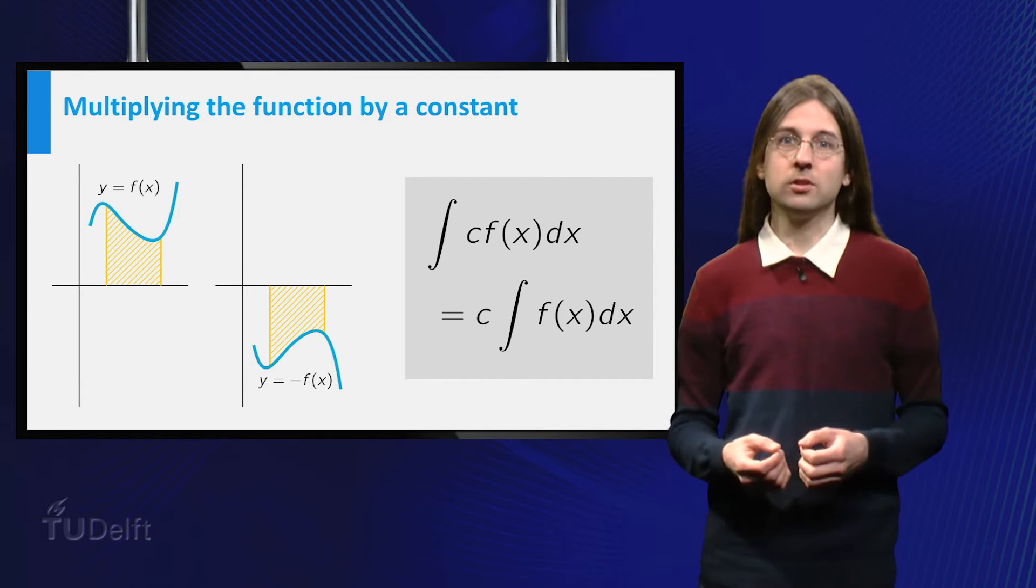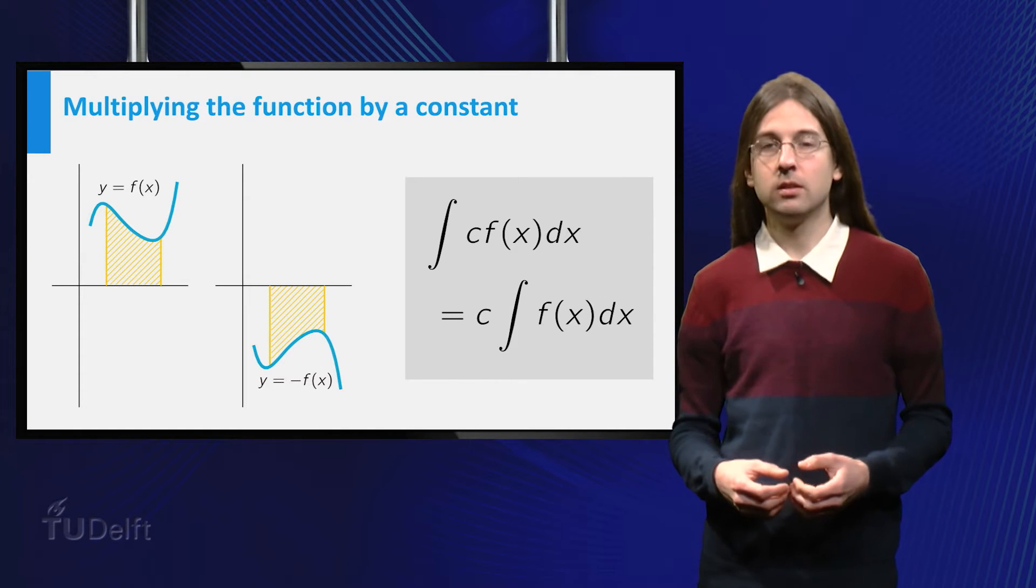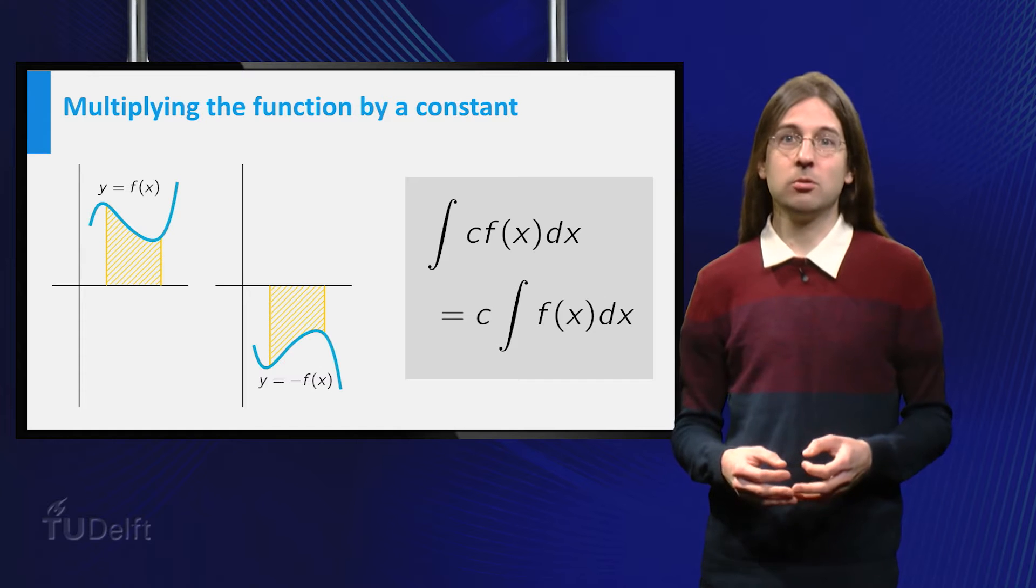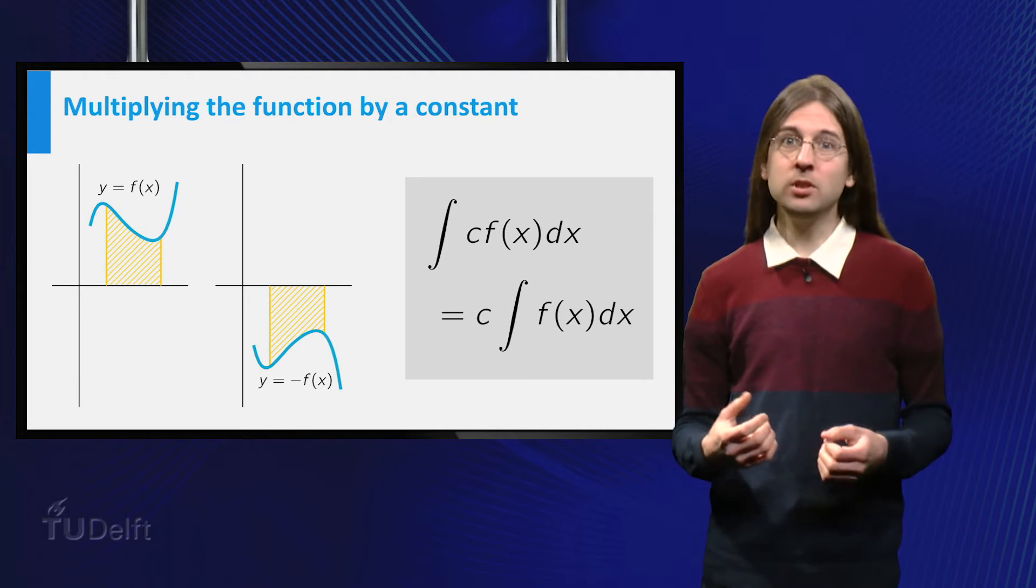Note that if the constant is negative, for example c equals minus 1, the region under the graph is reflected in the horizontal axis. Whereas the area above the horizontal axis would count positively,